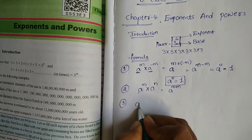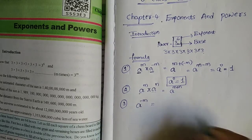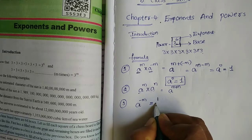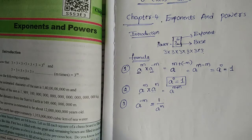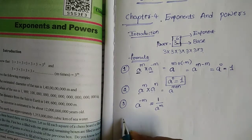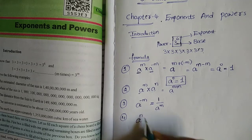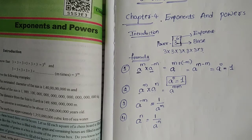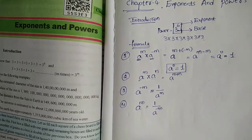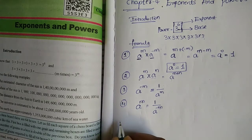The third formula is: a to the power of minus m equals 1 by a to the power of m. The fourth formula is: 1 by a to the power of minus m, where the exponent is 1 by a to the power of minus m.